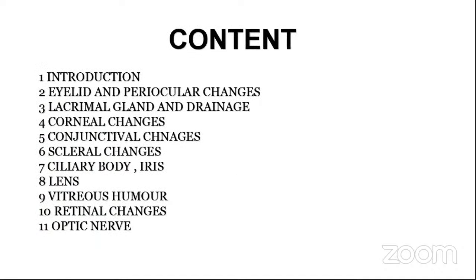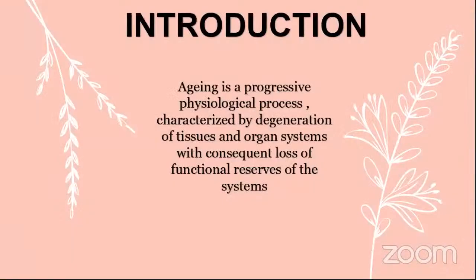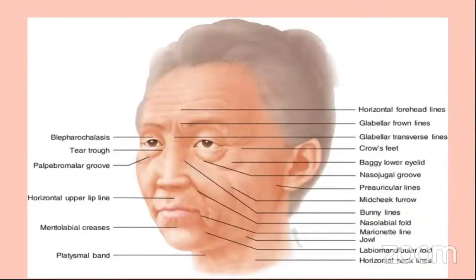The content of my presentation covers aging — it is a progressive physiological process characterized by degeneration of tissues and organ systems with consecutive loss of functional reserves. It is a gradual, natural process characterized by the breaking down of tissues and organs and a slow loss of functional reserve. In this picture, we can see different changes that happen in old age: baggy lower eyelids, teardrop, blepharochalasis, and crow's feet. These are certain changes that happen in the face. Today we'll mainly talk about the eye.